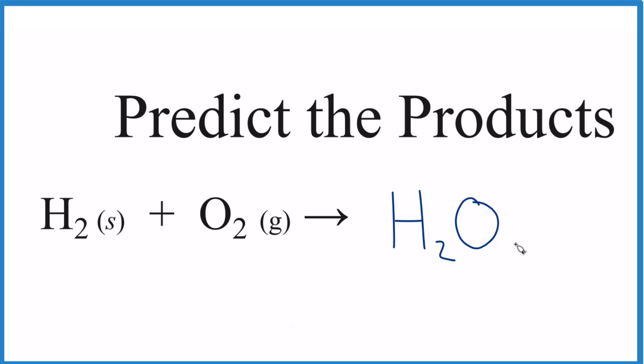It is possible that you could predict H2O2, which is hydrogen peroxide, but it's a fairly unstable molecule. So it's not likely that we're going to get H2O2 from this reaction.